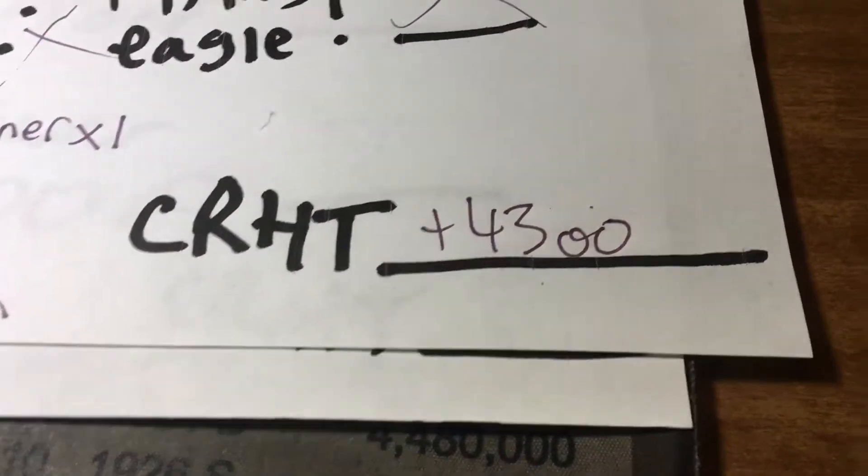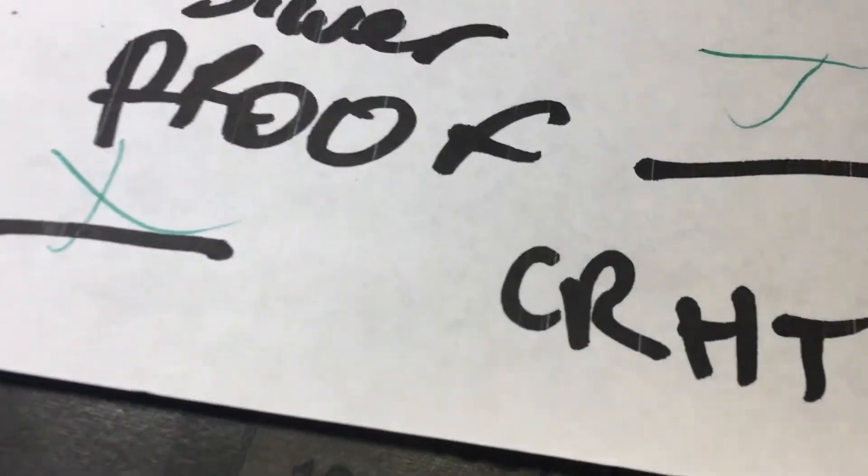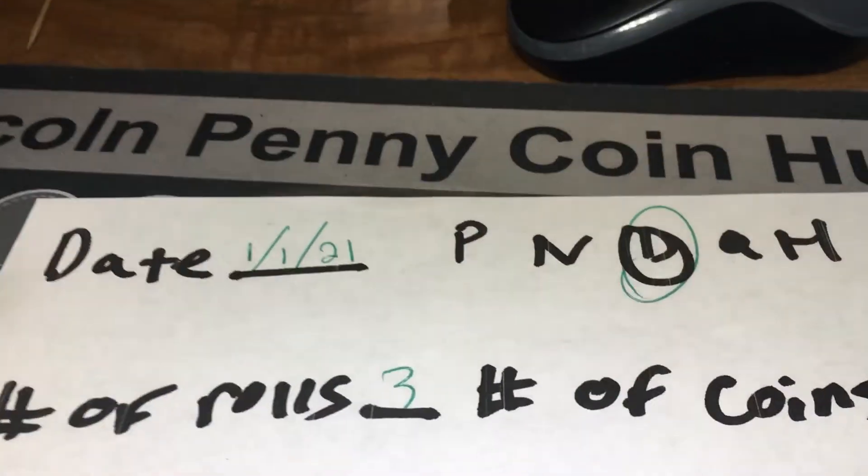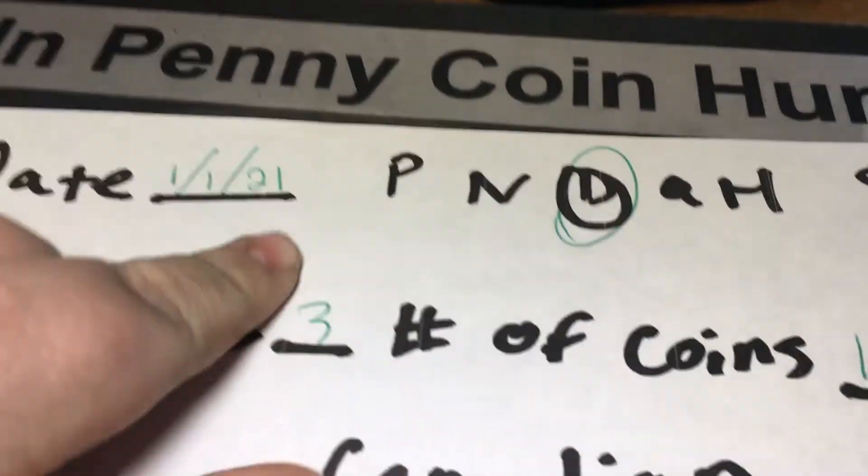And plus 3,300 for the CRHT for the year. And we have a 1-1 for the nines.